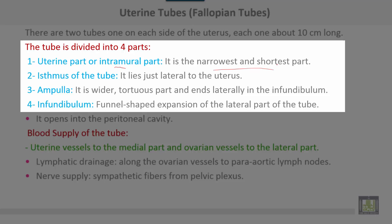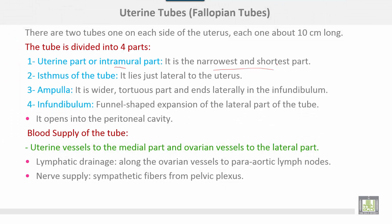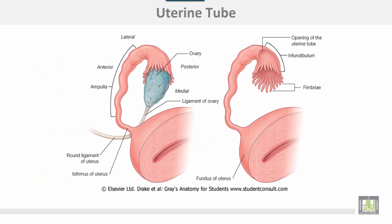The last part is the infundibulum, a funnel-shaped expansion of the lateral part of the tube that opens into the peritoneal cavity. Blood supply of the tube: uterine vessels supply the medial part, and ovarian vessels supply the lateral part. Lymphatic drainage follows the ovarian vessels to the para-aortic lymph nodes. Nerve supply comes from sympathetic fibers from the pelvic plexus. The diagram shows the intramural part inside the wall of the uterus, then the isthmus, ampulla, and infundibulum.